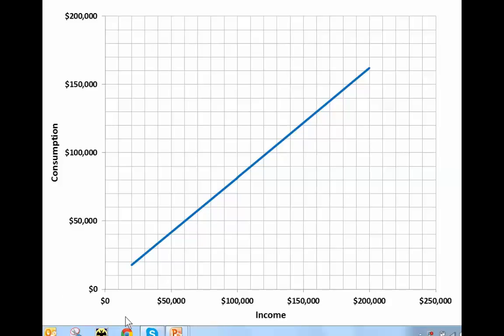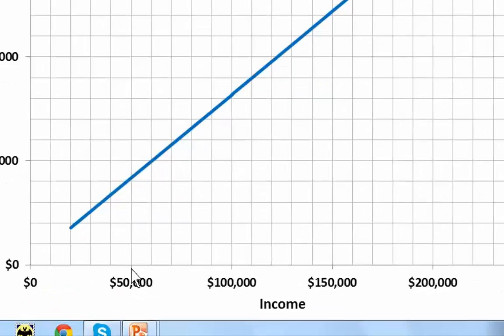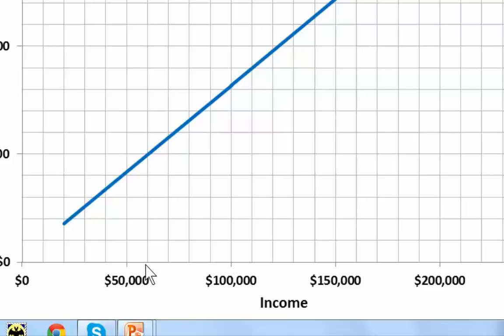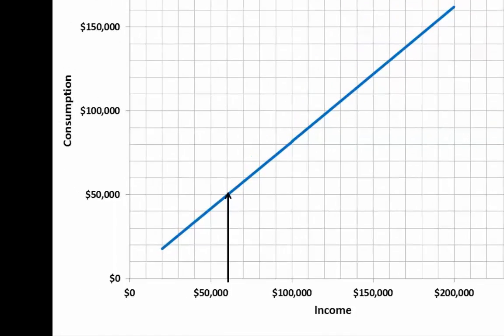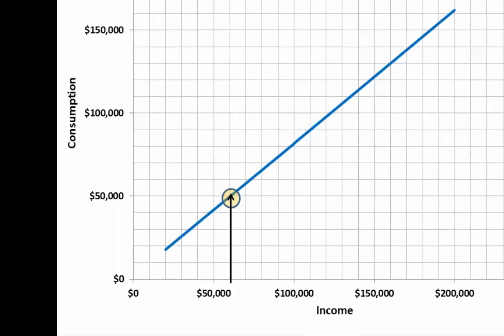Let's say we want to find out what is the consumption that is caused by an income of $60,000. So first we look for an income of $60,000, which is here. And from there we go straight up to the graph. Then from that point we go horizontally to the left and we end up at $50,000.